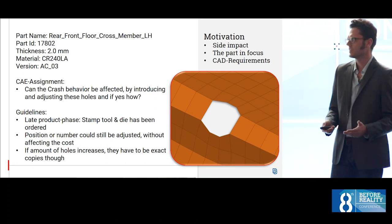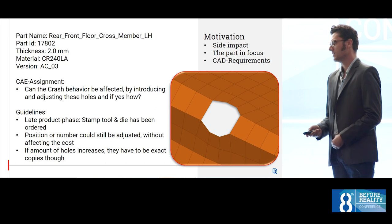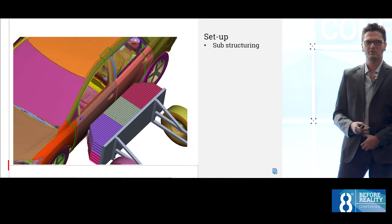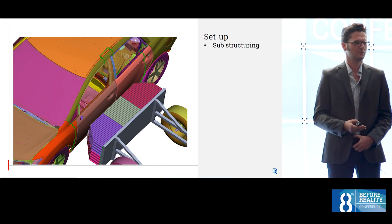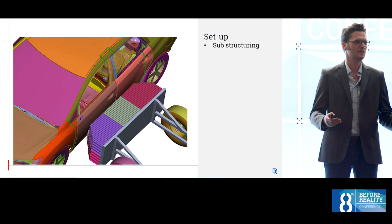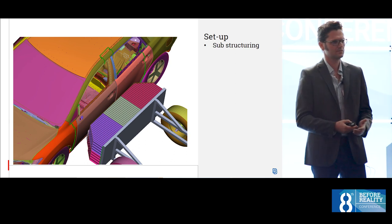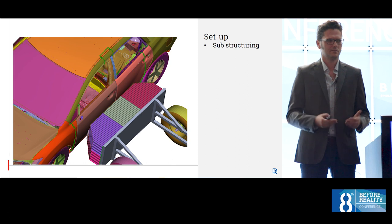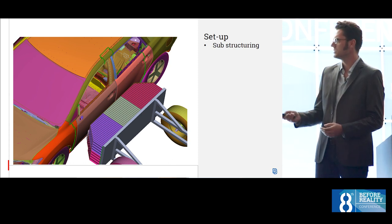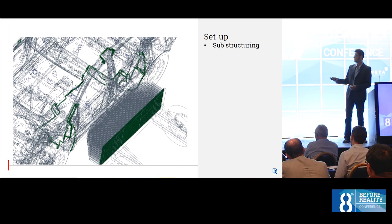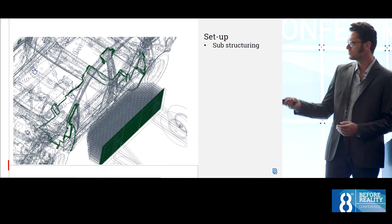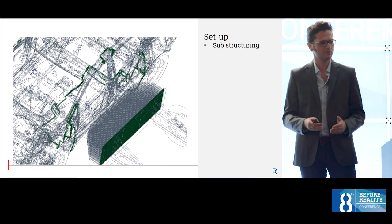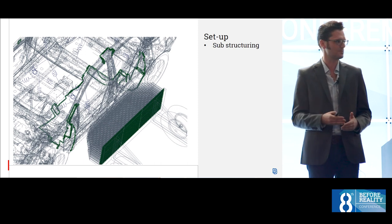The first thing that we did in order to realize this scenario was to reduce the calculation time, the computation time of the crash simulation itself, because it took many hours. What we did was we applied a substructuring, so that we reduced the model size for the simulation. These green nodes that you see are the residual nodes that connect the substructure with the car that's getting simulated in every cycle.